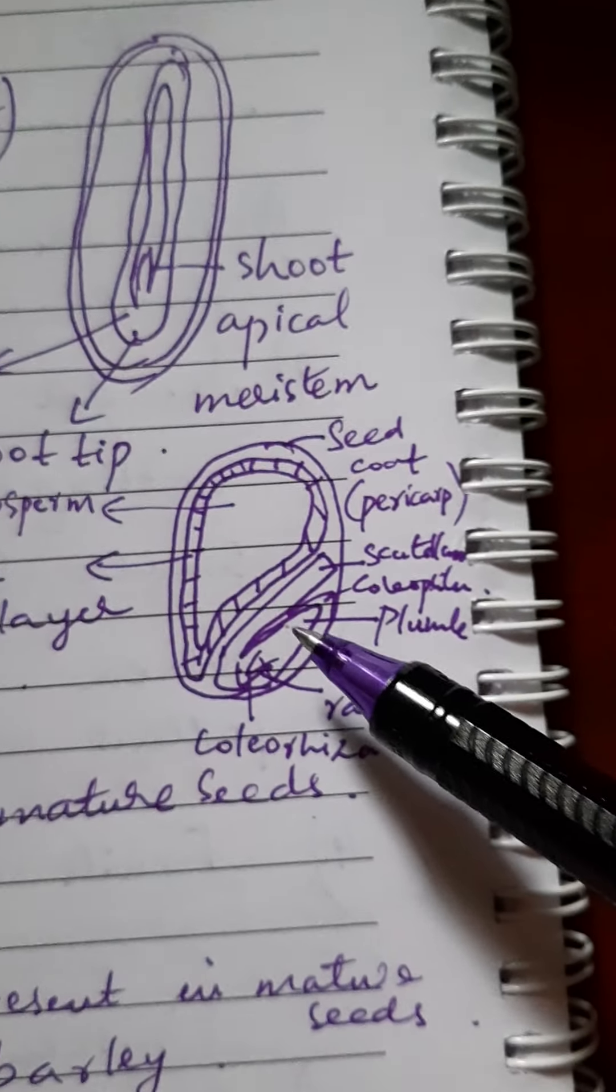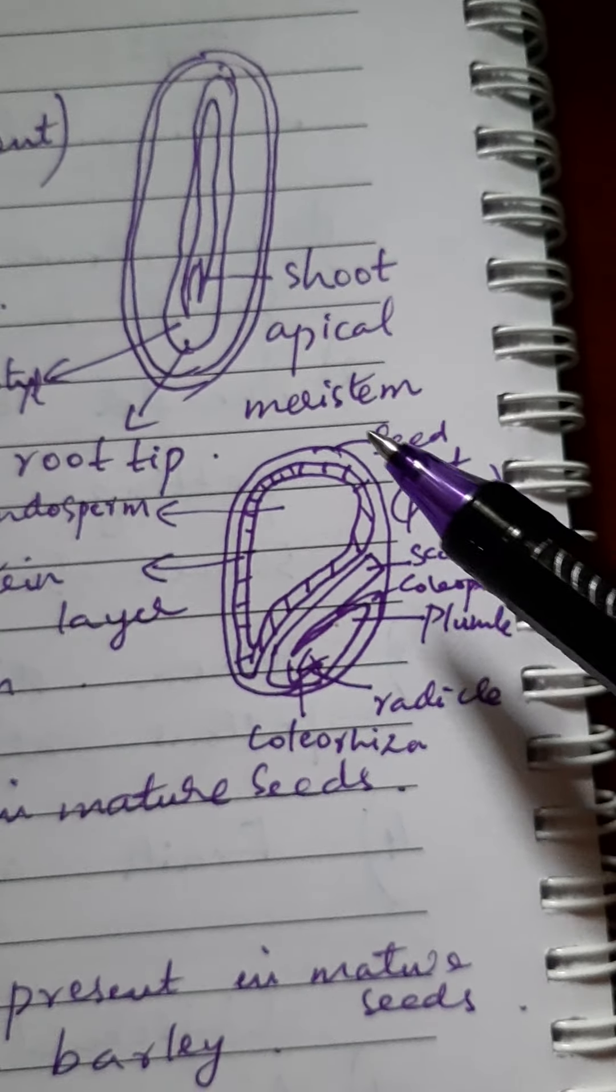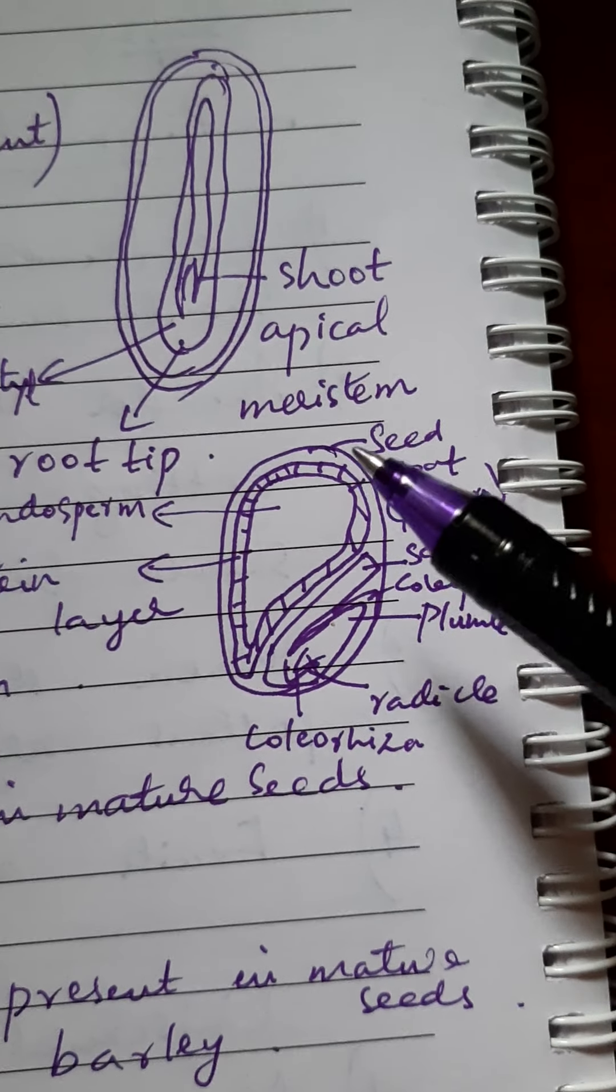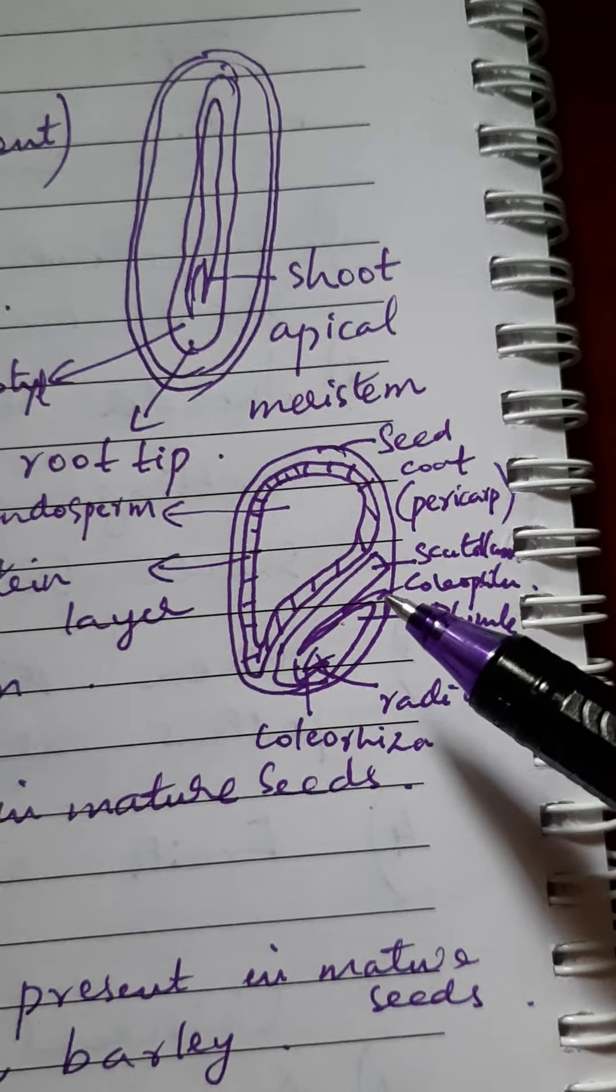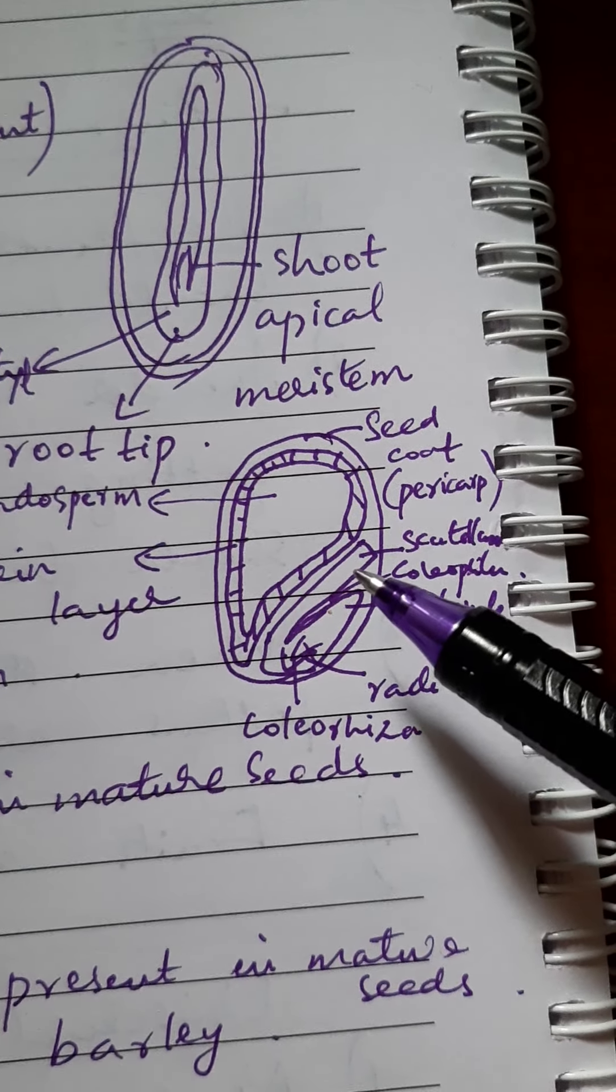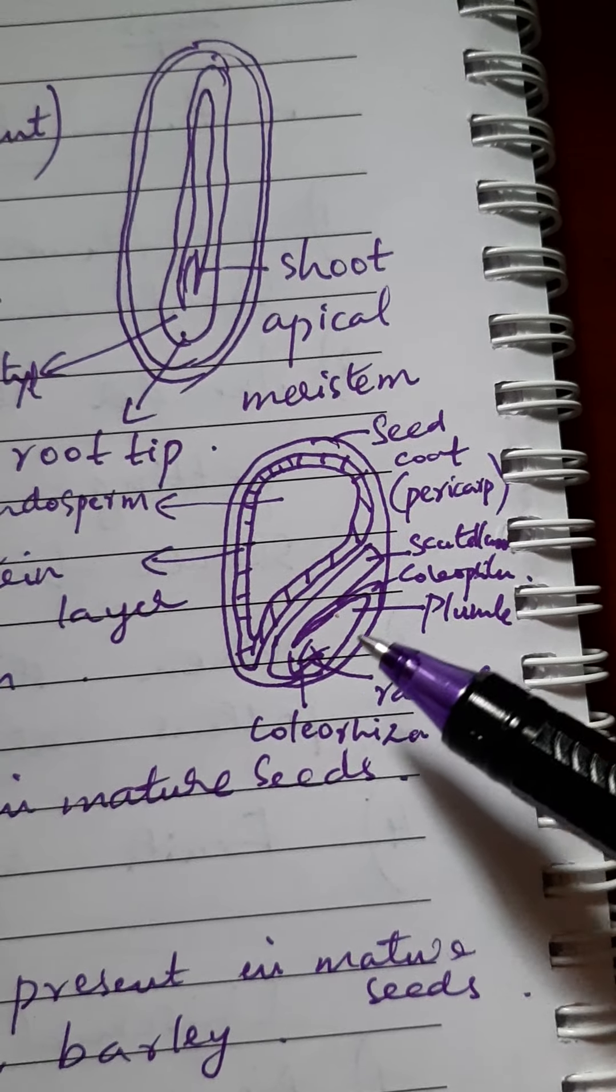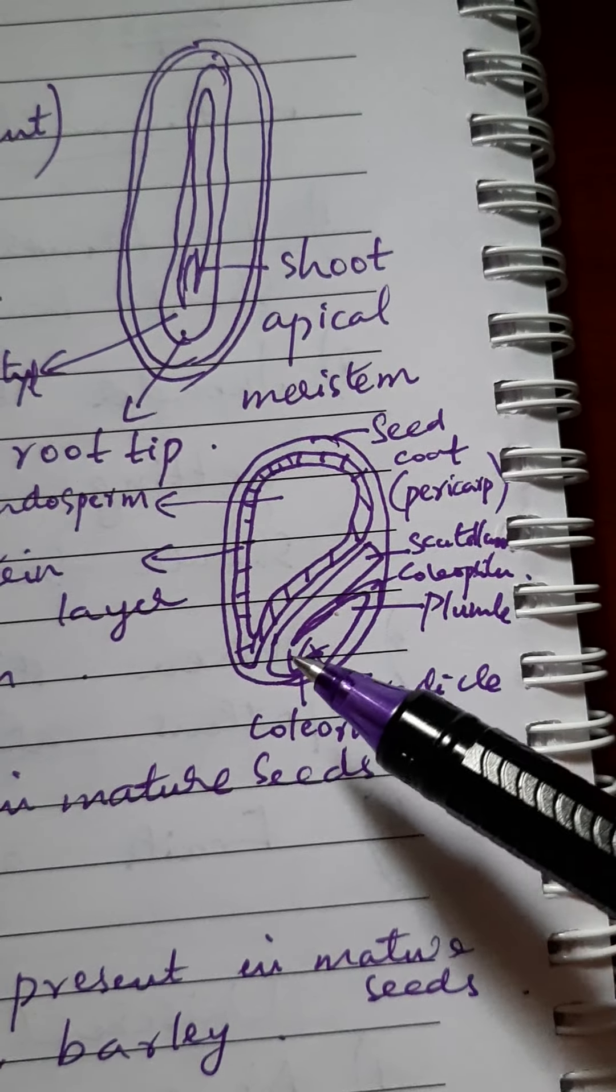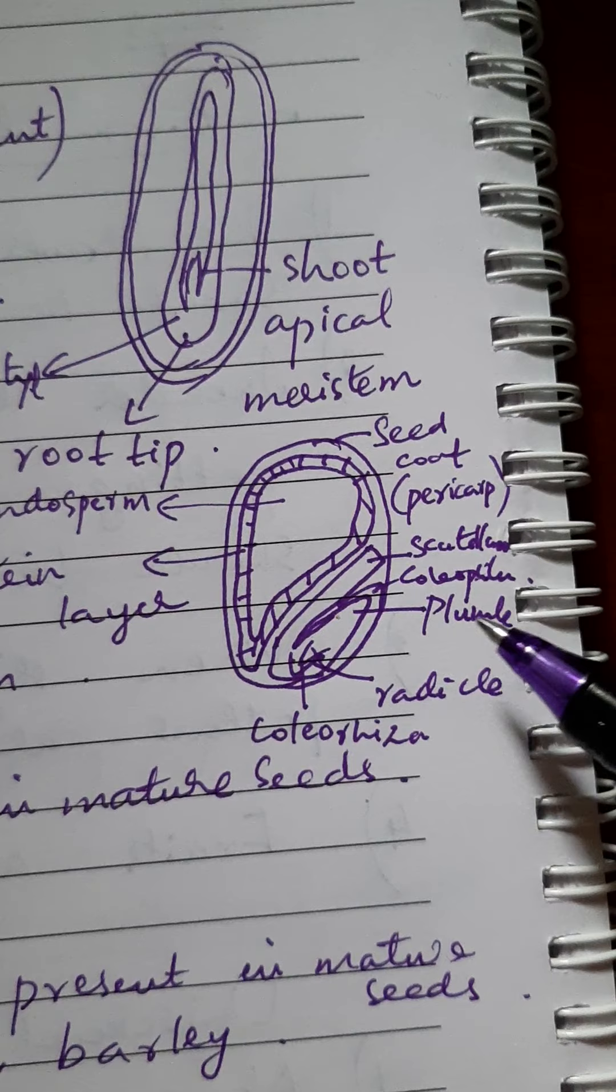Now this is the structure of a monocot seed. A monocot seed will have only one cotyledon, this is called scutellum, and the embryonal axis is placed towards the side of the scutellum. It is having plumule.